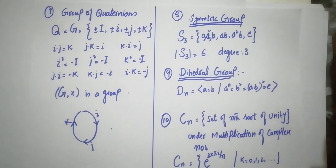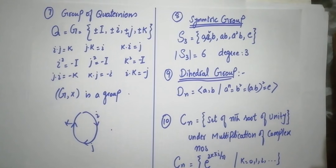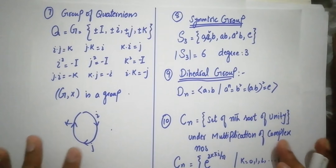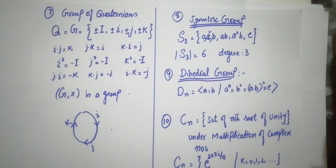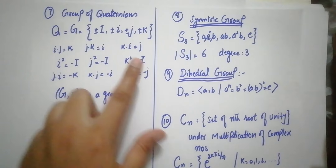Those are our six examples. The seventh example, which is used a lot, is the Quaternion group. This also appears in BSc and MSc courses with a lot of dealings. It is represented as Q or Q8. It is important that there are 8 elements in it and they have specific behavior. The elements are ±1, ±i, ±j, and ±k.